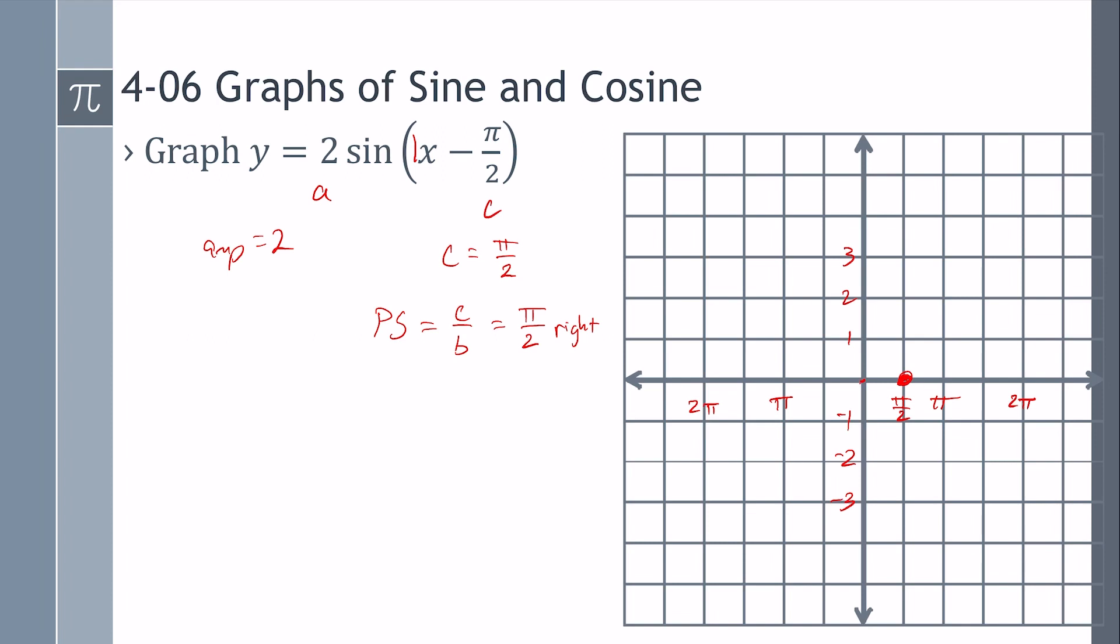And then I have the other X intercept at the period, which was 2 pi, but I'm shifted over to the right, pi over 2. Halfway in between is the other X intercept. Halfway in between are the amplitudes, which are 2.